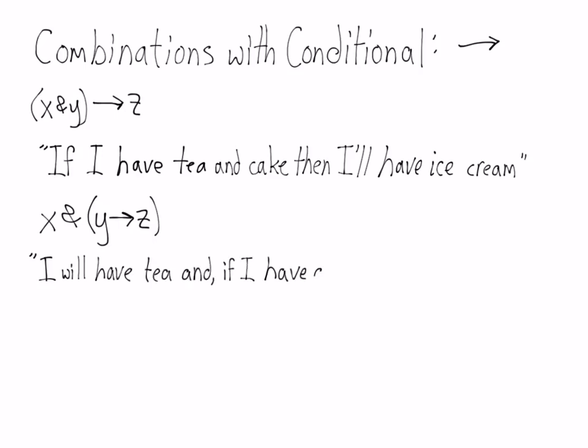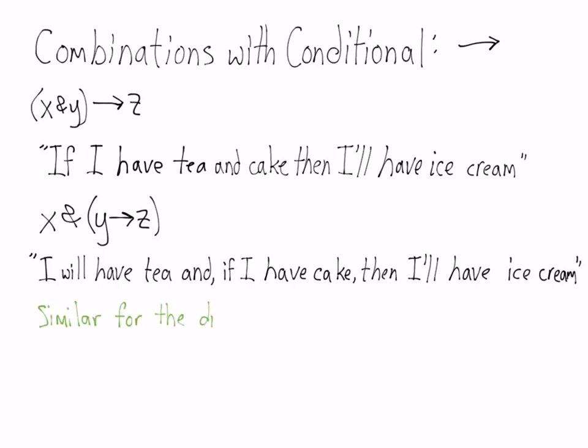That's different than the next sentence, where you have a conjunction and one of the conjuncts is a conditional. This says: 'I will have tea and, if I have cake, then I'll have ice cream.' Here the condition is y — I have cake — and the consequence is z — I'll have ice cream. Notice, in the second sentence, you are definitely having tea, whereas in the first one, it's only a possible condition. It's similar for the difference between 'x or y implies z' and the version where the brackets apply to the entire antecedent or just part of it.